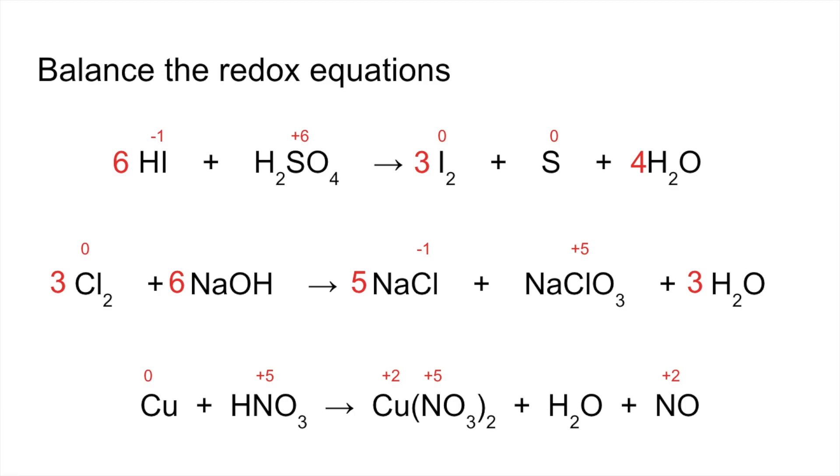We've got oxidation number changes of 2 and 3. The best thing to do is get the change up to 6. If we multiply the copper nitrate by 3, we'll put a 3 in front of that copper. That gives us a change of 6 for the copper. If we put a 2 in front of the NO, that gives us a change of 6 for 2 of the nitrogens in the HNO3.